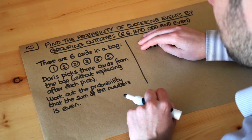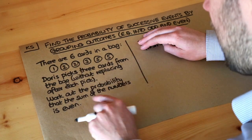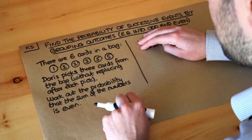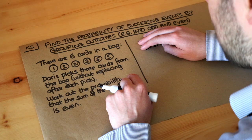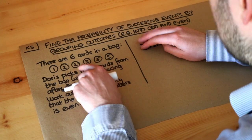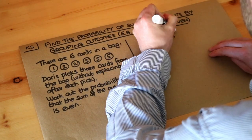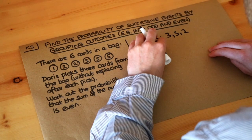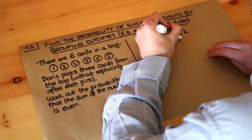Now what we might do is just think of three of these numbers that add to give an even number. So it could be, for example, that we have three, five and two. So we could have three, five, two. That adds to give an even number. Or we could have two, three, five.